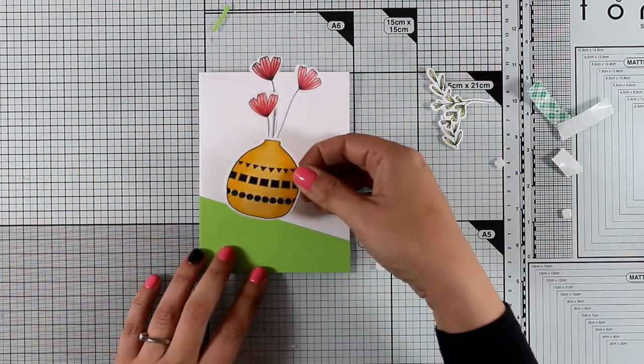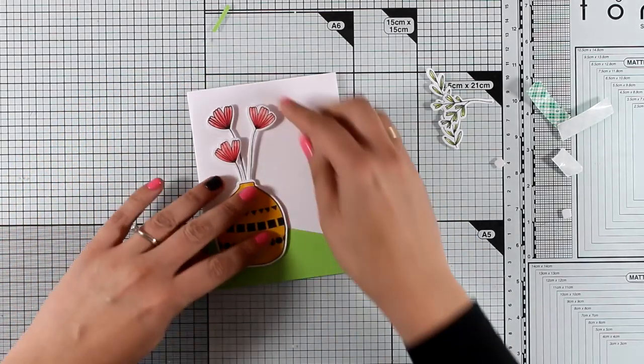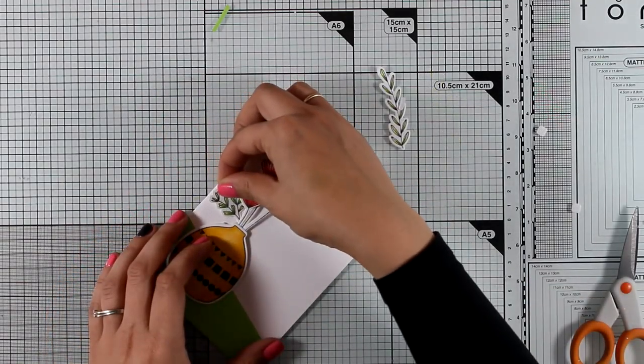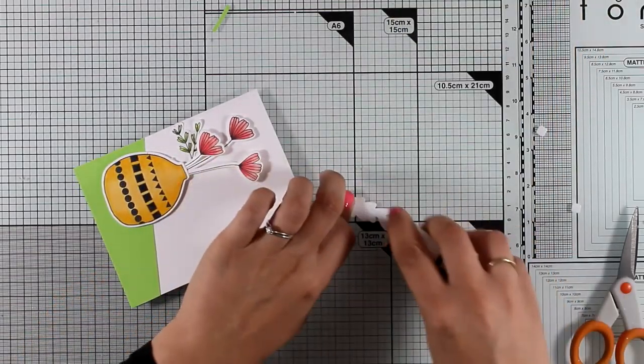If you follow my videos, you probably know by now that I love dimension on my cards. I use some foam tape at the back of the vase and the flowers for added dimension. Now I need to secure down the leaves. For that, I'm going to use tape adhesive at the back and just place them as if they're coming out of the vase.